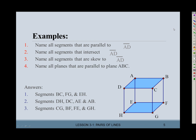What about a plane that's parallel to plane ABC? Plane ABC is the top blue plane. The only plane here that's parallel to that is the bottom one, which is plane FGH.